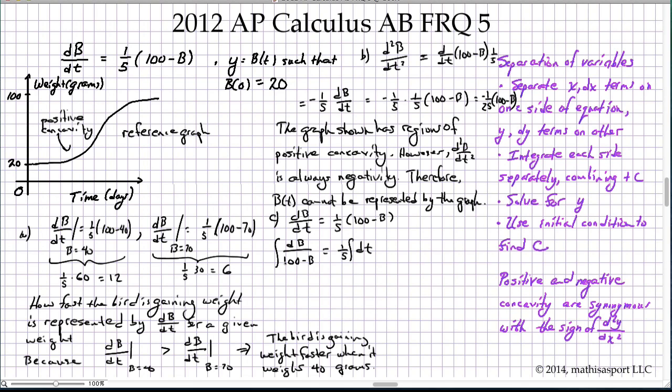And because this has a negative factor of B in it, if we did the u-substitution, we would get the fact that ln of absolute value 100 minus B—we actually get a negative sign there. And that equals one-fifth t plus C.